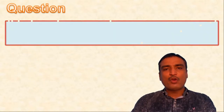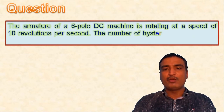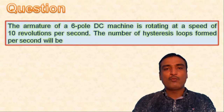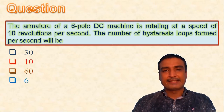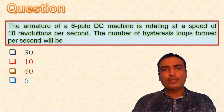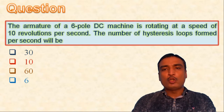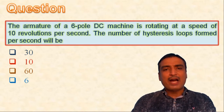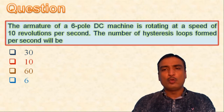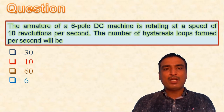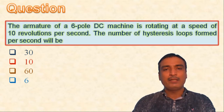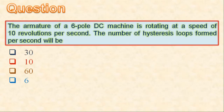Next question: the armature of a 6-pole DC machine is rotating at 10 revolutions per second. The number of hysteresis loops formed per second will be — 30, 10, 60, or 6. When any segment of the armature core passes under successive north and south poles, the magnetic domains undergo reversals. One hysteresis loop is formed per pair of poles. With 6 poles, there are 3 pole pairs, so the number of hysteresis loops per second is 3 × 10 = 30. The first option is correct.